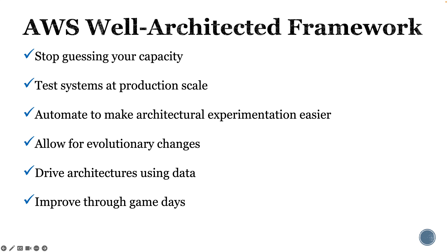Test systems at production scale — create production scale testing, complete testing, and then decommission your resources. This way you only pay for the test environment when it's running, and you can simulate a live production environment at a fraction of the cost of testing on-premises. Automate your architecture, which makes experimentation easier. Automation removes manual efforts and allows you to track changes, audit any impacts, and roll back if needed.